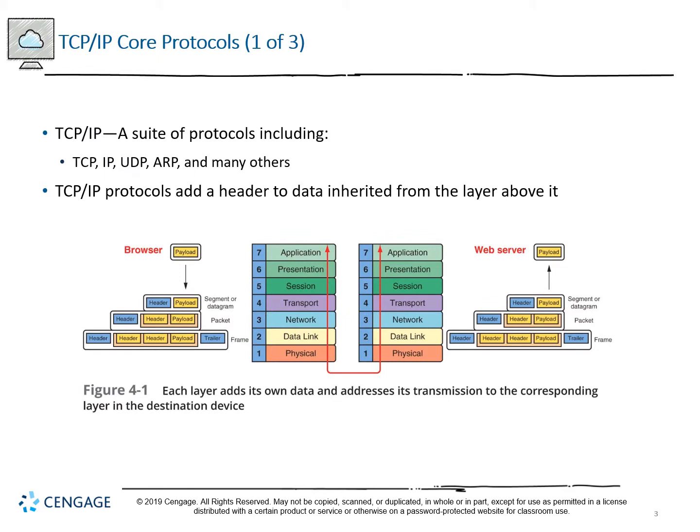TCP/IP is a suite of protocols — a collection that includes TCP, IP, UDP, ARP, and a couple of others. TCP/IP protocols process data through the encapsulation process by adding headers. The diagram in Figure 4.1 shows how the payload — the original piece of data generated by the application — is processed into various PDUs, or protocol data units, by the addition of a header.